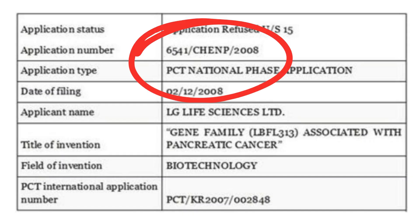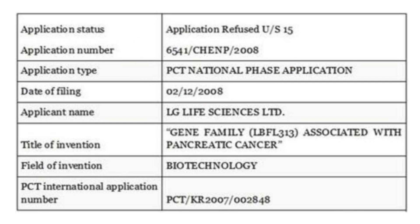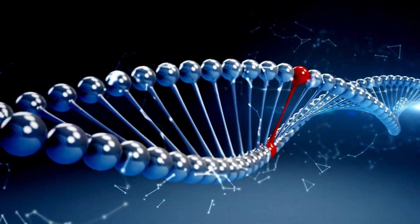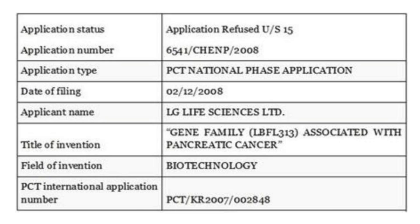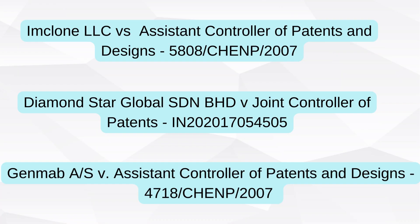Coming to Section 3C, this subsection states that the mere discovery of a scientific principle, the formulation of an abstract theory, or the discovery of any living thing or non-living substance occurring in nature is non-patentable. You can have a look at case 6541 CHENP 2008, where claims 1 to 4 were directed to an isolated nucleic acid sequence from human genomic DNA. Because it is isolated and occurring in nature, it is not allowed under Section 3C of the Act. A few recent lawsuits which have clarified the language of Section 3C are on the screen and must be understood well to stay updated on the interpretation of Section 3C.